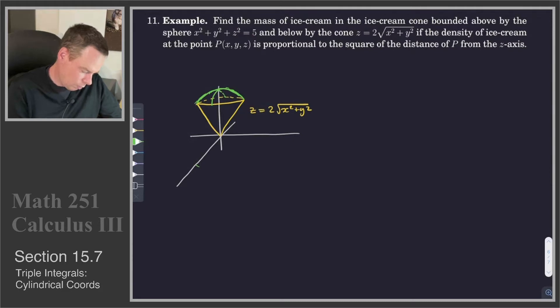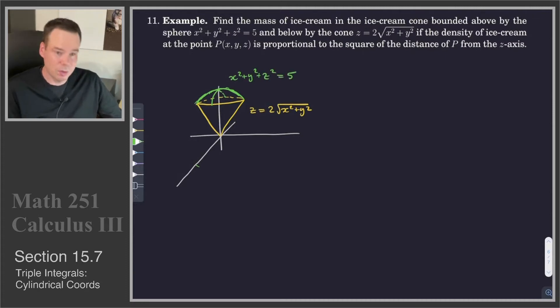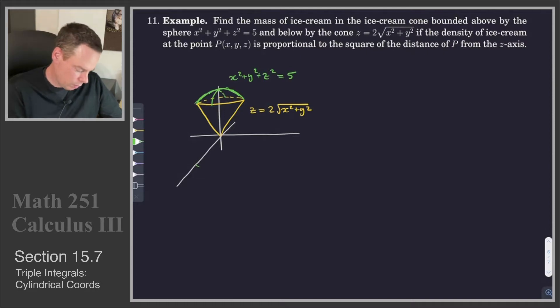This is a portion of the sphere x squared plus y squared plus z squared equals 5. And so we're interested in what's trapped between these two — we've got a sphere up above and a cone down below.